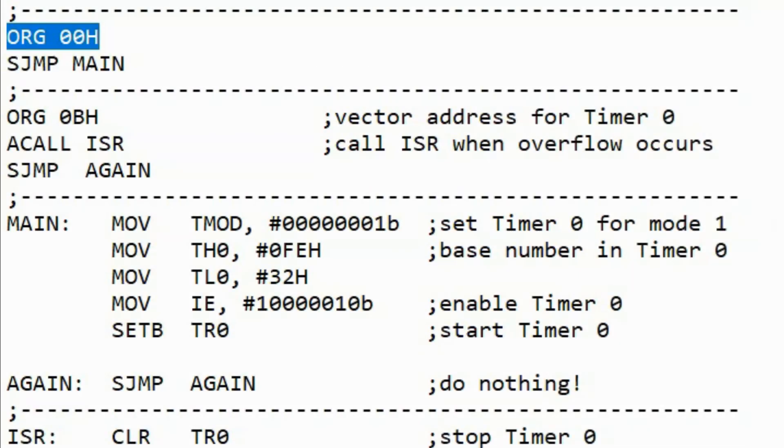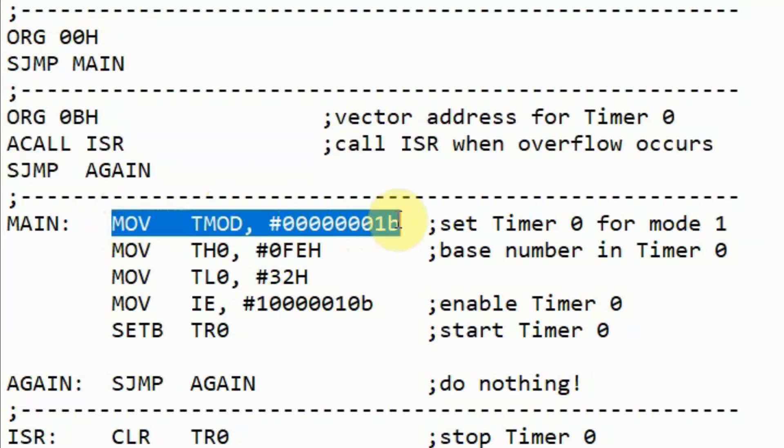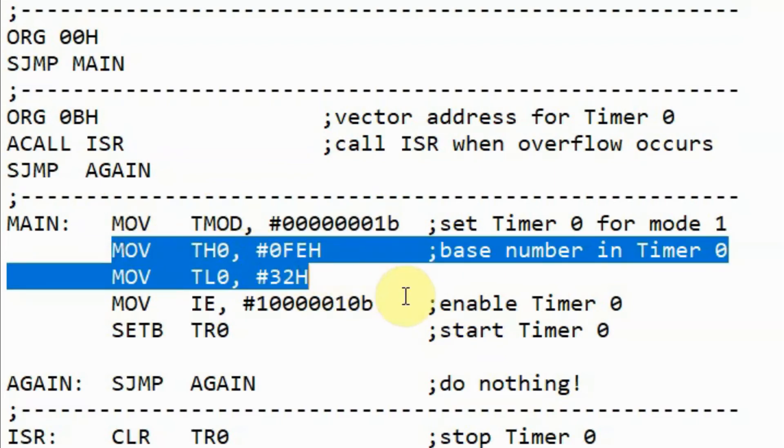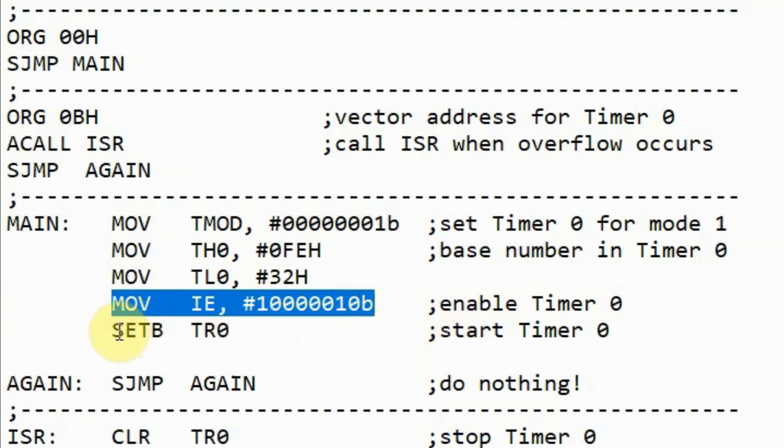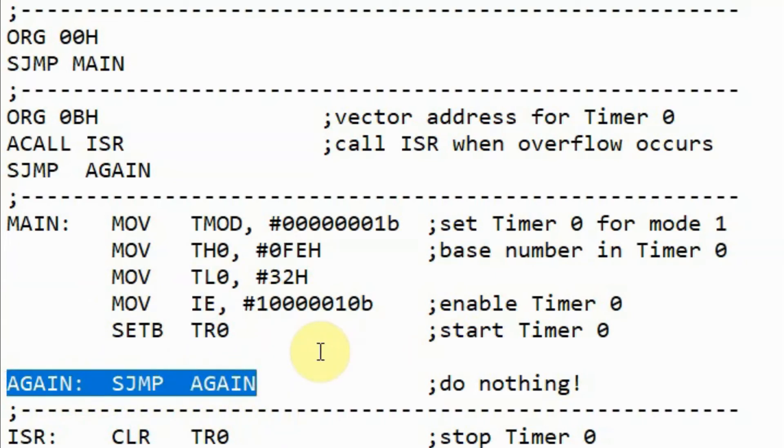This is the assembly code used to generate the 1 kHz square waveform. We start with the origin directive and then we jump to label main so that we skip the part related to timer 0. Inside the routine main, the first thing we do is to set timer 0 for mode 1 by programming the timer mode register. Then we store within the timer 0 registers the base number which we calculated in the previous example. Then we initialize timer 0 and start timer 0. Here we have an indefinite loop to do nothing so that timer 0 is working in the background.